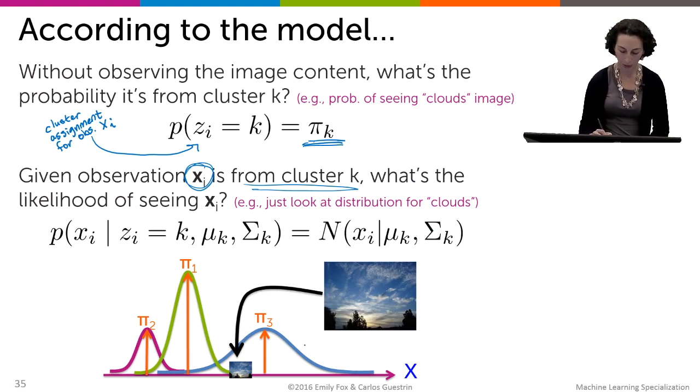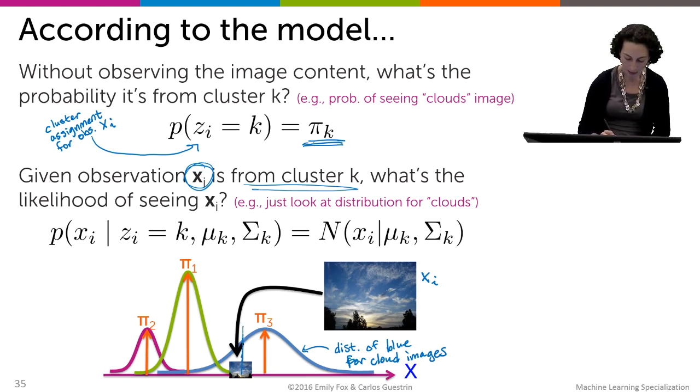In this case, what we do is we simply go to the distribution of blue for cloud images. We say, let's take this one image I have. This is my x_i image. I look at its blue intensity, and I say, under this distribution for clouds, how likely is it? Well, it's pretty likely. So it's reasonable to say that this was a clouds image.